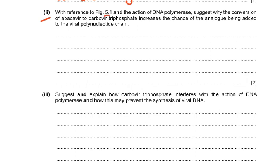Part 2 asks, with reference to figure 5.1 and the action of DNA polymerase, to suggest why the conversion of abacavir to carbavir triphosphate increases the chances of the analog being added to the viral polynucleotide chain. Carbavir triphosphate is very similar to an activated nucleotide — similar to AG nucleotides — and has 3 phosphates, so it is activated or phosphorylated. DNA polymerase adds it to the growing chain and forms hydrogen bonds with complementary bases. It acts as a substrate for DNA polymerase and phosphodiester bonds are formed between nucleotides.